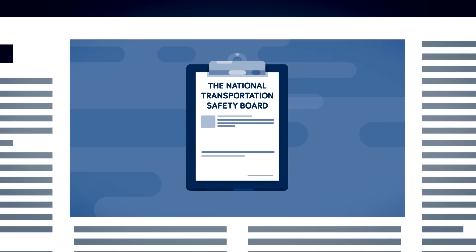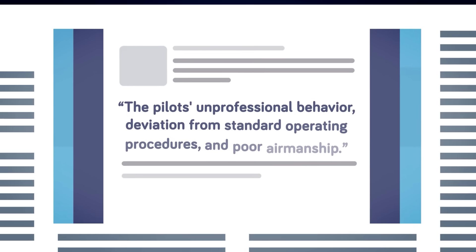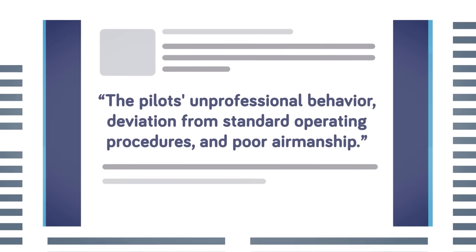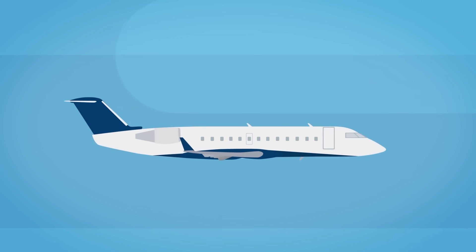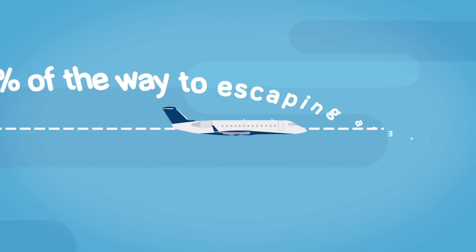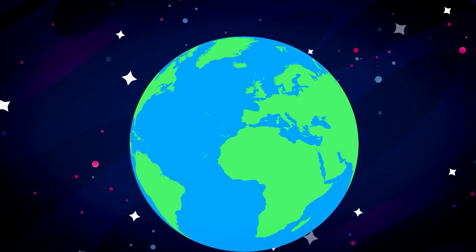The National Transportation Safety Board listed the causes of the crash as the pilot's unprofessional behavior, deviation from standard operating procedures, and poor airmanship, which seems a little harsh given that they were already dead. If the pilots' goal was to get to space, well, let's just say they didn't get close. Only reaching 41,000 feet, they were over just 12% of the way to escaping our atmosphere.